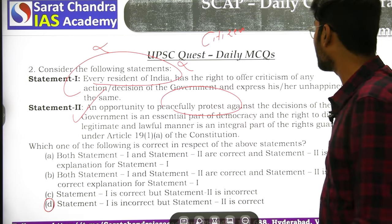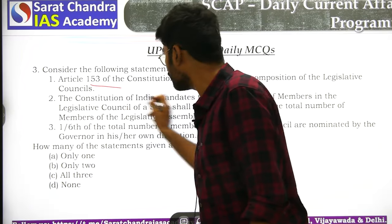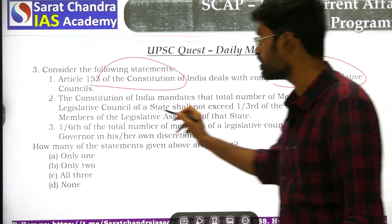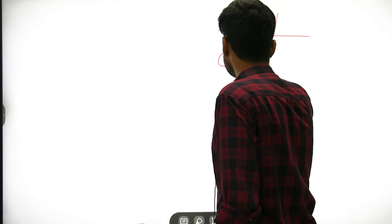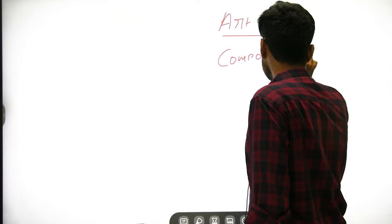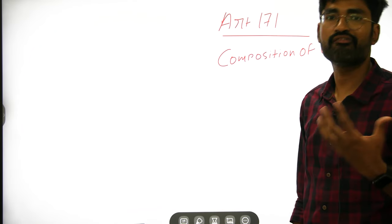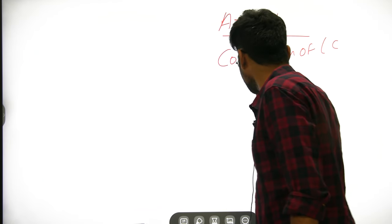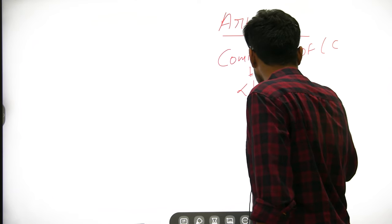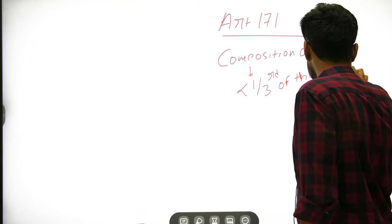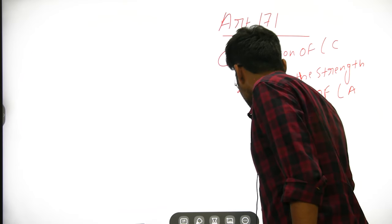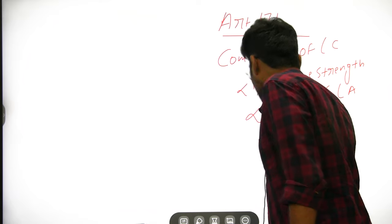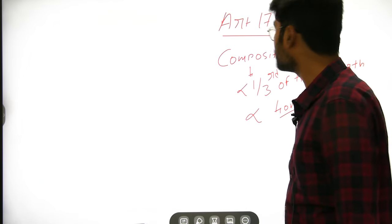The next question asks whether Article 153 deals with the composition of legislative councils. Actually, it is Article 171 that deals with the composition of legislative councils. The total strength of the legislative council should be not more than one third of the strength of the legislative assembly, but should not be less than 40 members.